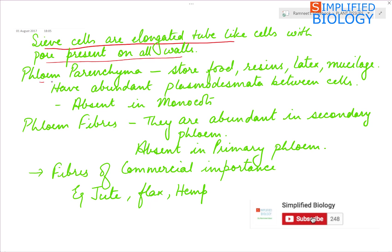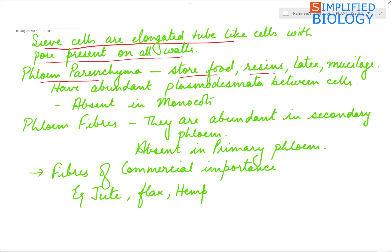Next, the phloem parenchyma. Phloem parenchyma are the parenchyma cells associated with phloem. They store food, resins, latex, and mucilage. They have abundant plasmodesmata, that is protoplasmic connections between cells. However, phloem parenchyma are absent in monocots.